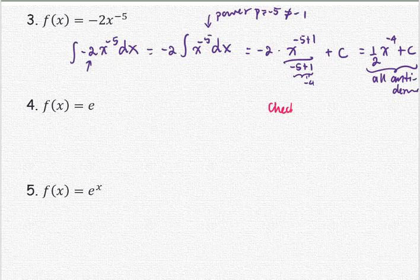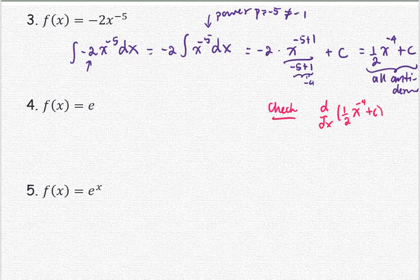We can check by finding the derivative of (1/2) times x to the negative fourth plus C, which gives negative 2 times x to the negative fifth — the same as the integrand.